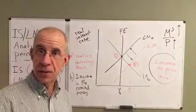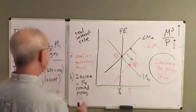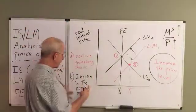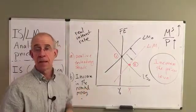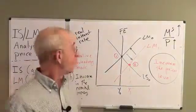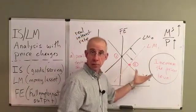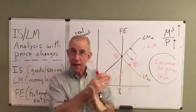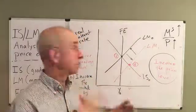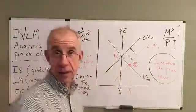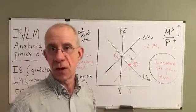So in both of these cases — the technology shock and the change in the money supply — we want to look at how the intersection of the IS and LM curves relates to the full employment level of output. That's really the key, because it tells you where the pressure is.